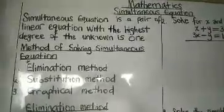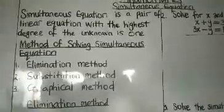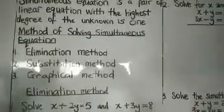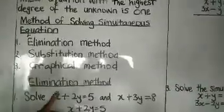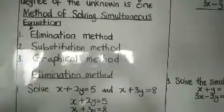The one we are dealing with today is two linear simultaneous equations. We have the highest power here to be one, the highest power here to be one, so it's a linear simultaneous equation. Anyone that has the highest power to be two, that is quadratic simultaneous equation.